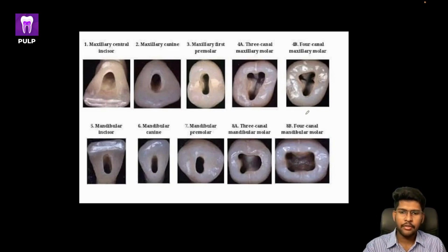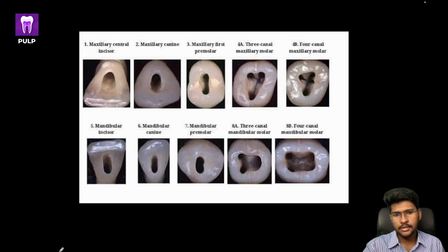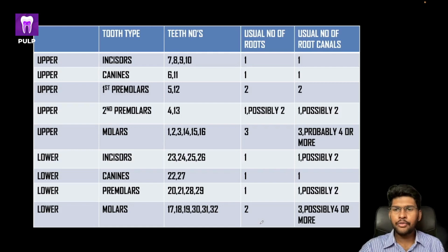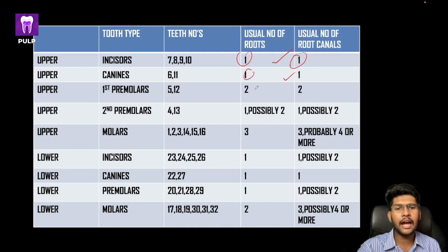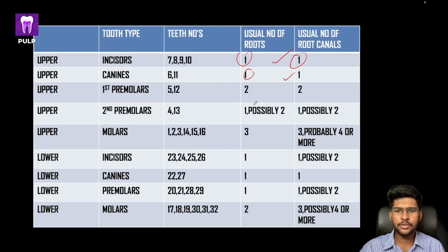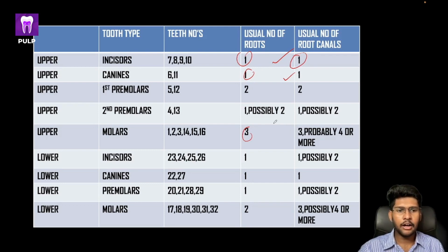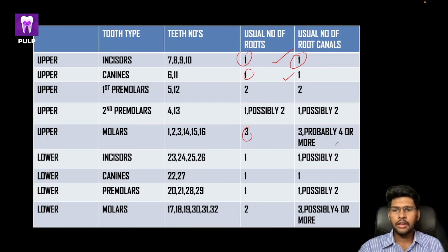Here we have ideal access cavities for different teeth. You have a rounded triangle in maxillary central incisors and mandibular molars, a dumbbell shape in maxillary premolars, and an oval shape in maxillary canines. Regarding roots and canals: maxillary central and lateral incisors generally have one root and one canal; maxillary premolars mostly have two roots with two canals; second premolars sometimes have one, sometimes two; upper molars always have three roots but may have four canals, including the MB2 or mesiobuccal 2.